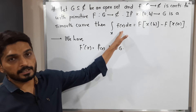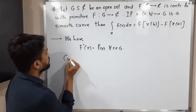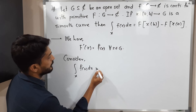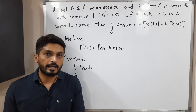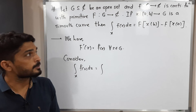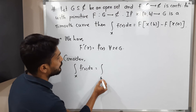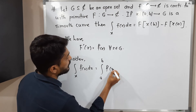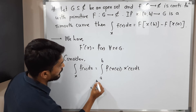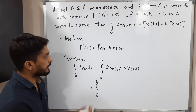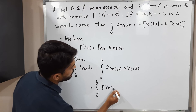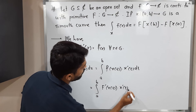We will start with the left-hand side and prove the right-hand side. Consider the line integral of f(z) dz over γ. Using the definition of the complex line integral, with curve γ defined on [a, b], this equals the integral from a to b of f(γ(t)) times γ'(t) dt. Since small f is the derivative of capital F, we replace small f by F', giving us the integral from a to b of F'(γ(t)) times γ'(t) dt.